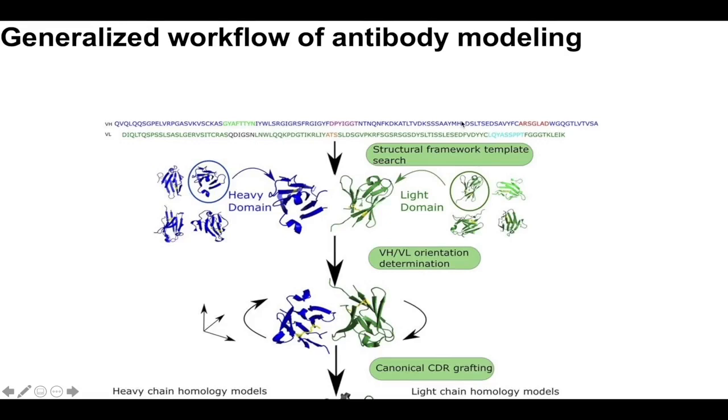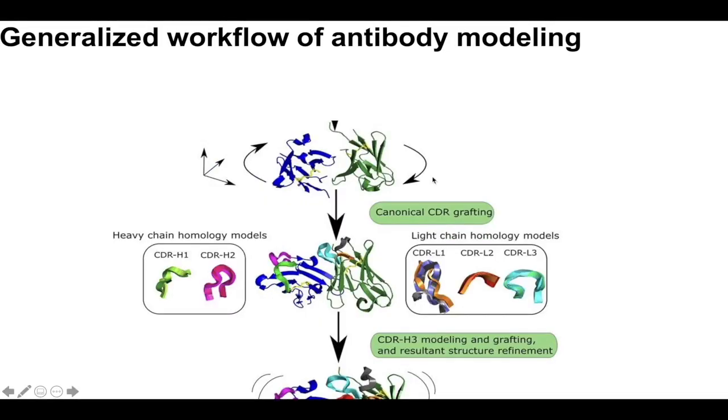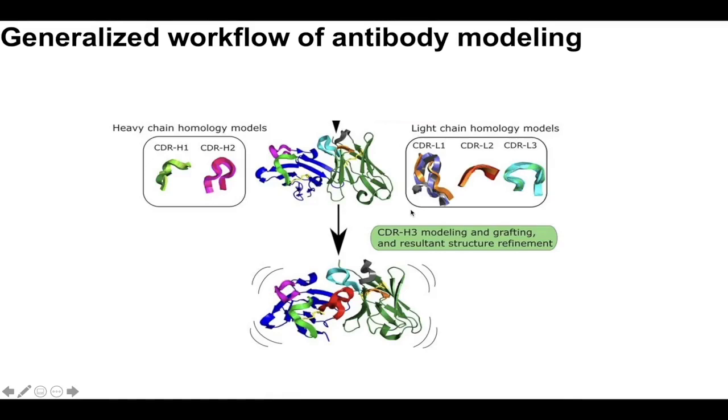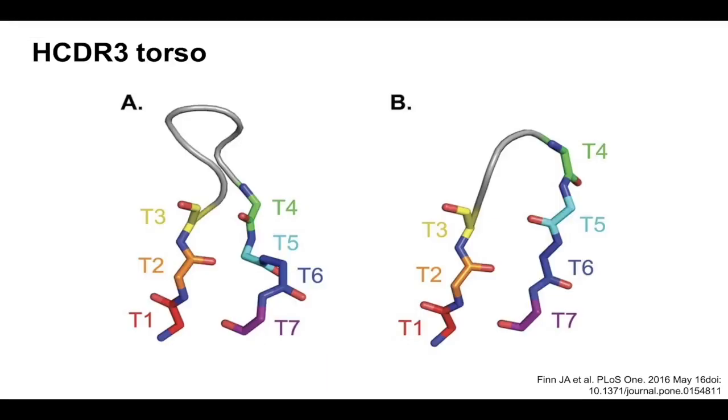And so piecing together the various things that we've talked about so far, we're going to use this figure from the Rosetta antibody paper. And it basically just shows that they're doing two separate structure searches for framework templates that they can use. And then they do the orientation determination. And then they show that you're grafting the canonical CDRs using experimental data. And then they generate homology models. And then they do a portion where they remodel the CDRH3. And then they do some general refinement stuff.